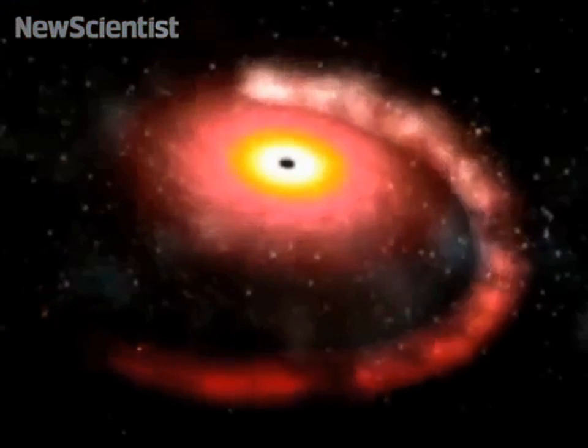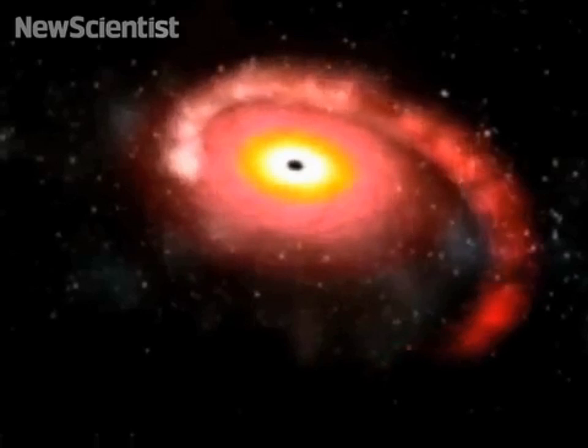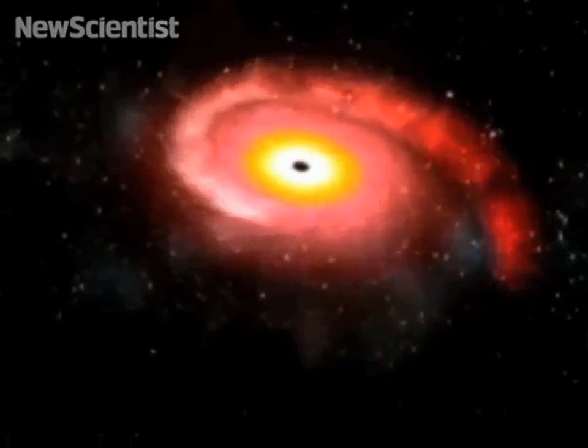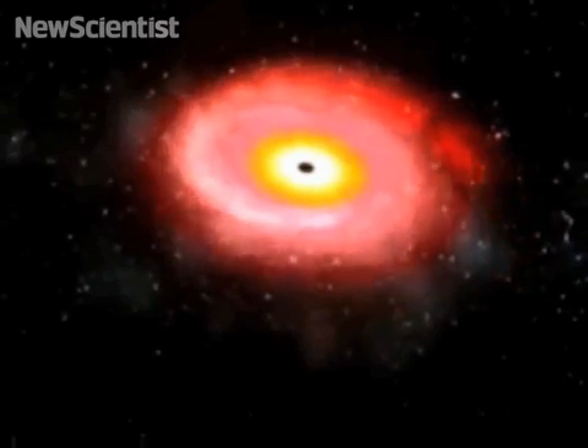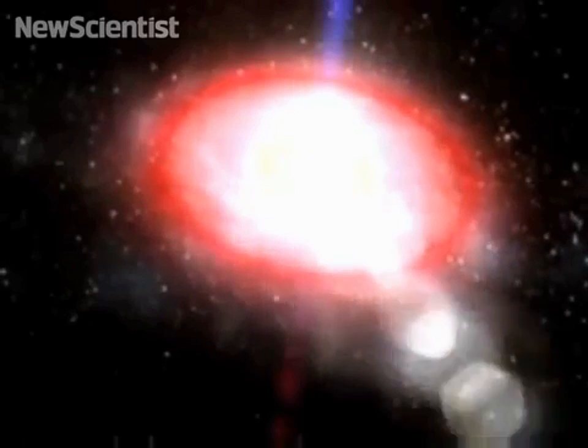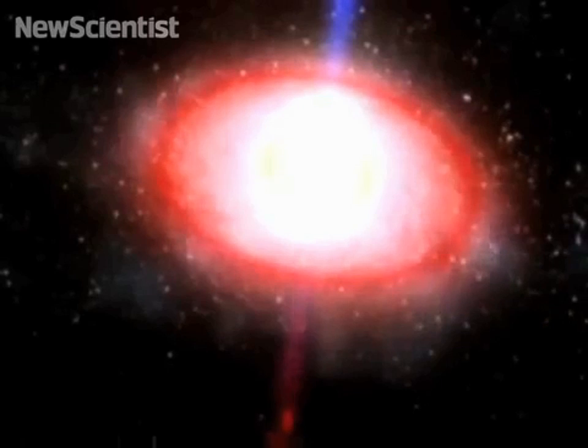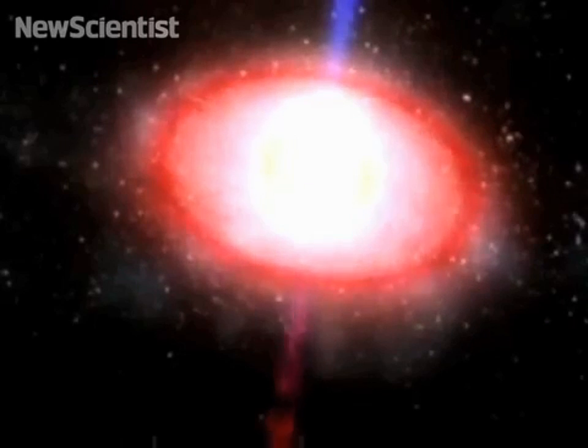The matter within accretion disks can sometimes be accelerated to superhigh speeds over the poles of a black hole. When this happens, something paradoxical occurs. Particles are thrown out into space. Exactly why this happens is not clear, but the matter flies out in the form of high-speed jets.